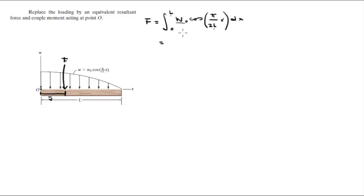So the integral of cosine of an angle, you gotta use the integral of cosine of the angle. Times the constant becomes W0 times 2L over pi, is the reciprocal of the fraction inside the parenthesis, sine of pi over 2L X from 0 to L.